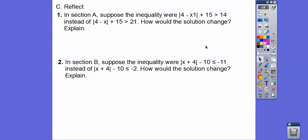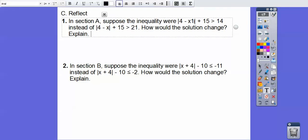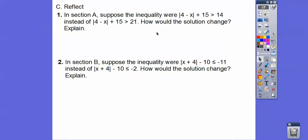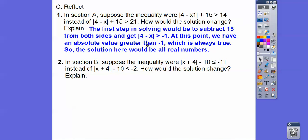Suppose in section A the inequality were 4 minus x greater than 14 instead of greater than 21. We'd solve it the same way: minus 15 from both sides, giving us the absolute value of 4 minus x greater than negative 1. We can stop here because an absolute value is always greater than a negative number. Absolute value represents positive numbers, so when you see absolute value greater than a negative number, that's always true no matter what x is. The answer is all real numbers.